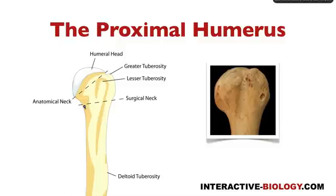There's one more structure that I want you to be aware of, and that is the deltoid tuberosity. As we go more distal down the humerus, we have this deltoid tuberosity.